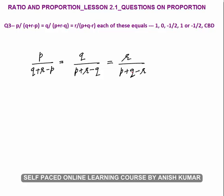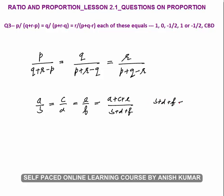Question 3: p upon (q plus r minus p), q upon (p plus r minus q) equals r upon (p plus q minus r). Find whether all three equal 1, 0, minus 1/2, or both 1 and minus 1/2. Recall the basic concept: if a/b equals c/d equals e/f, this always equals (a plus c plus e) divided by (b plus d plus f).